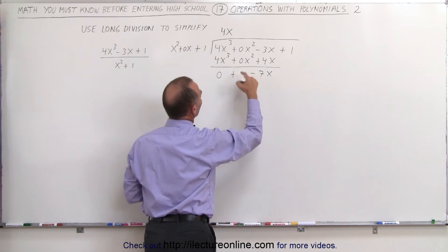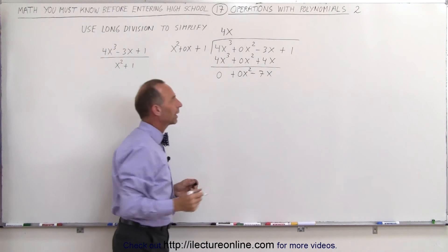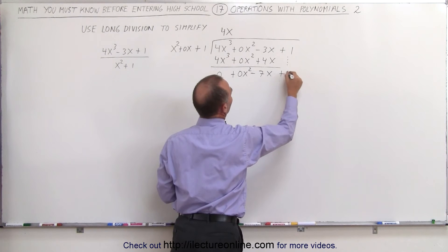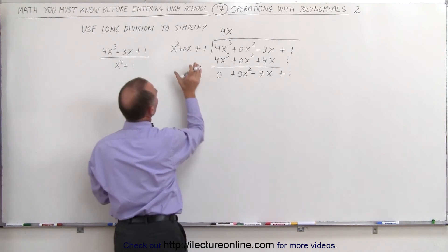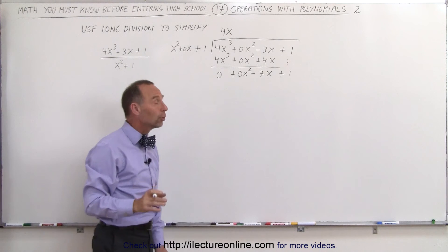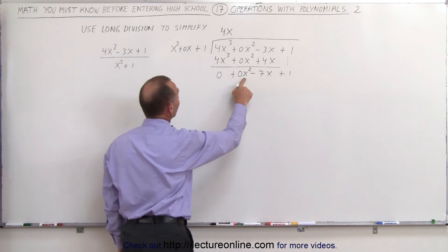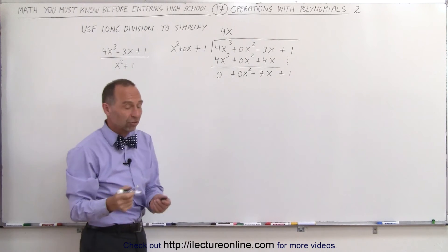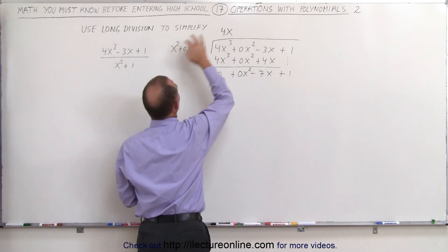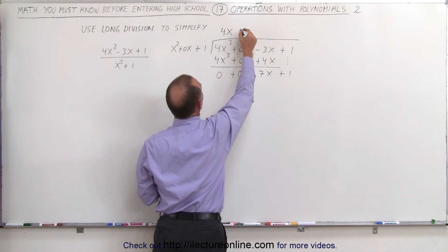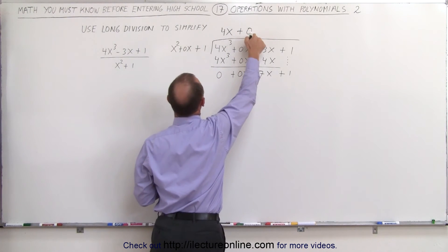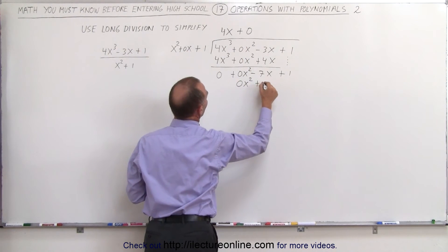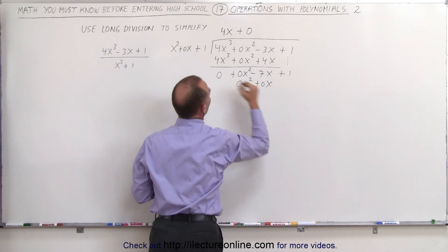I'll go ahead and write 0x-squared here to make it easier. The next step is to drop the next term down, so we write plus 1, and now we're going to divide this into here. Notice that this is 0x-squared, so x-squared goes into 0x-squared zero times — what number times this gives us 0x-squared? The answer is plus 0, because 0 times this gives us 0x-squared, 0 times this gives us plus 0x, and 0 times this gives us plus 0.